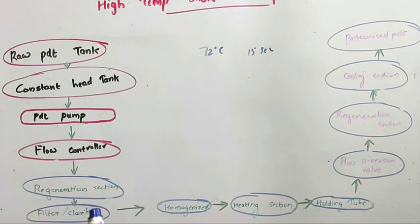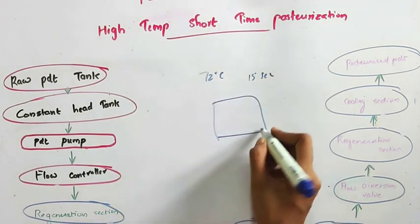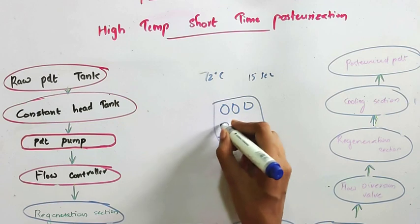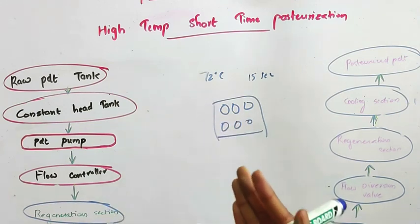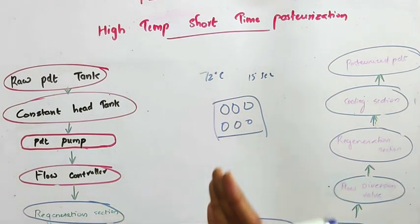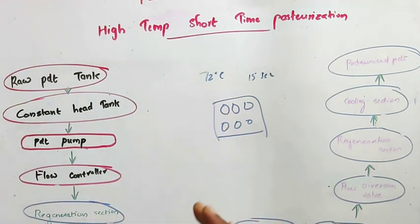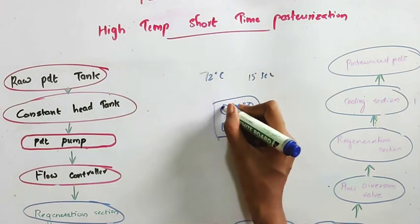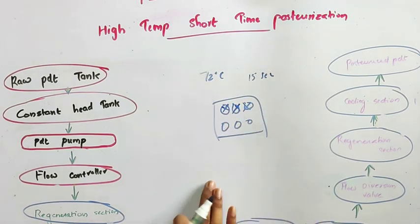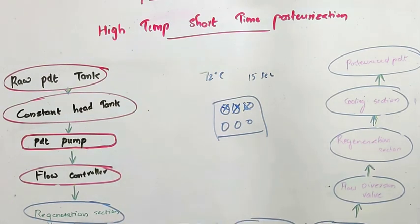From the regeneration section, the milk reaches the filter or clarifier, which is used for filtration purposes. From there, the milk reaches the homogenizer where homogenization is done. Milk contains a large number of fat globules. When these fat globules are present in milk and we keep the milk for some period of time, these fat globules accumulate at the top and form a fat layer. To prevent this, we reduce the size of these fat globules — that process is called homogenization, and it is performed in the homogenizer. From the homogenizer, the milk reaches the heating section.